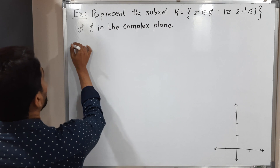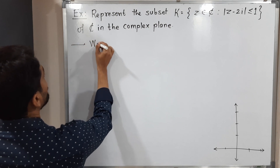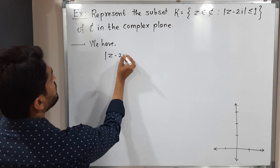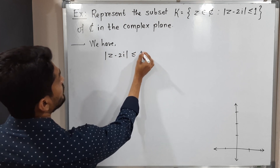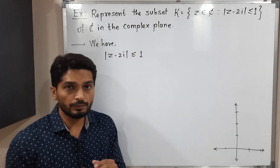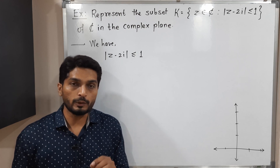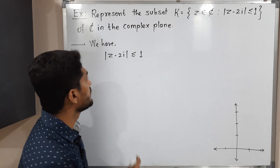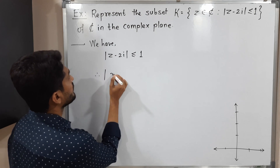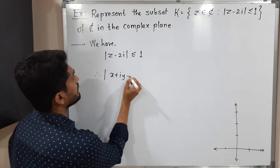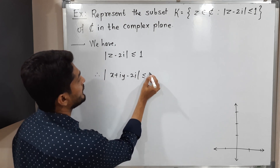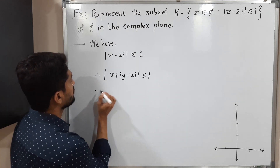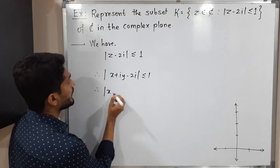We have mod(Z − 2i) ≤ 1. I am going to replace Z by its Cartesian form, that means x + iy. So therefore mod(x + iy − 2i) ≤ 1. Let us collect the imaginary part.